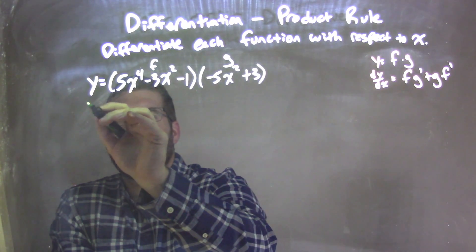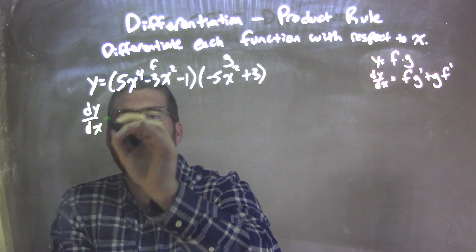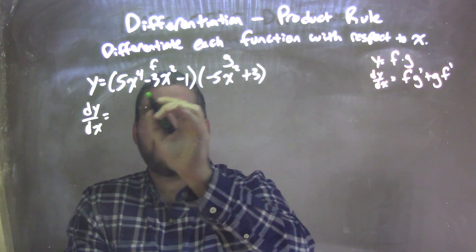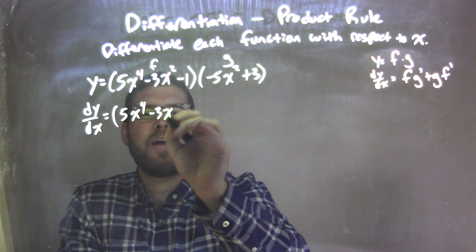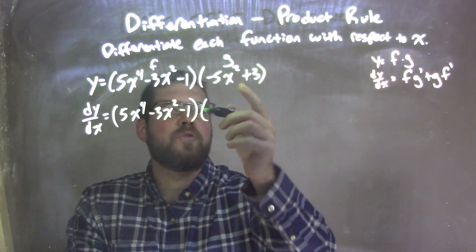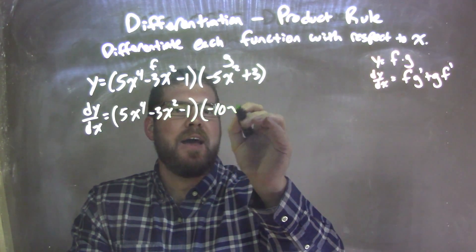So if I find my derivative dy dx, I have to apply the product rule. Product rule states the first part f, 5x to the 4th minus 3x squared minus 1, times the derivative of the second, which is negative 10x.